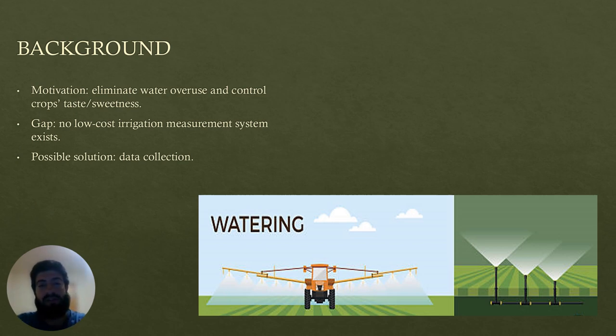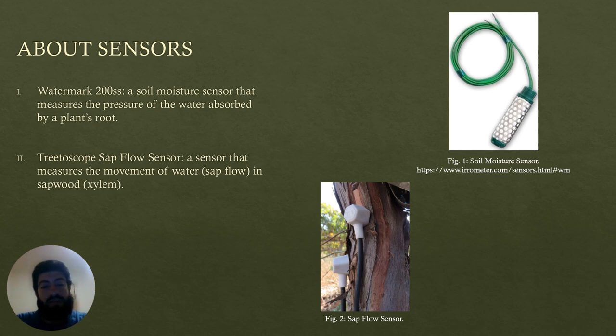The motivation behind this project is to prevent water wasting in irrigation and to control crops taste by applying specific amount of water. To know how much water we need to apply, we must consider how much water is available in the soil and in the plant's stem or trunk, and to measure these values we need sensors. The system doesn't exist and the sensors that do exist cost a lot.